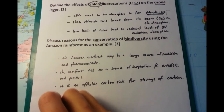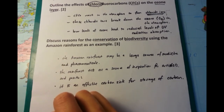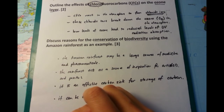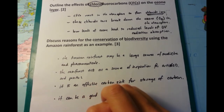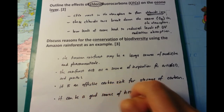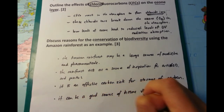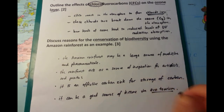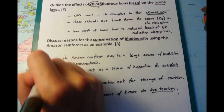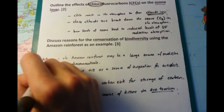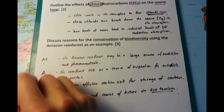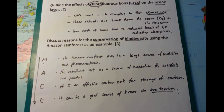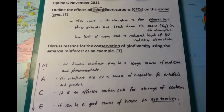The next point is E — it can be a good source of income via ecotourism. This is especially relevant for places such as South America, where individuals are somewhat less well off compared to their Western country counterparts. I'm writing down my little acronym MACE, which may help you memorise these points.